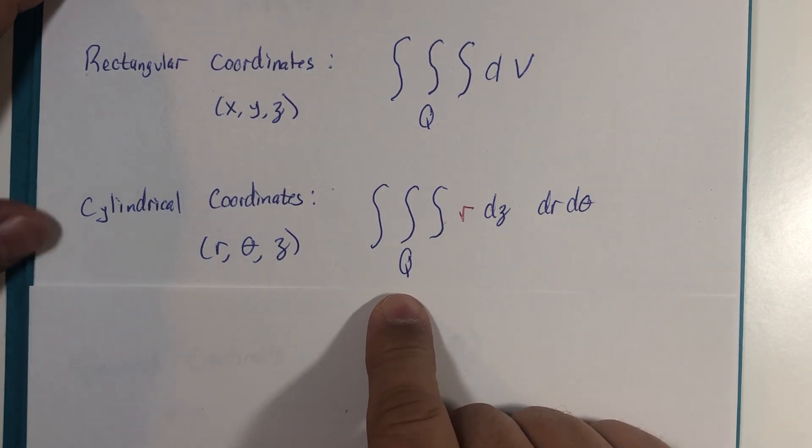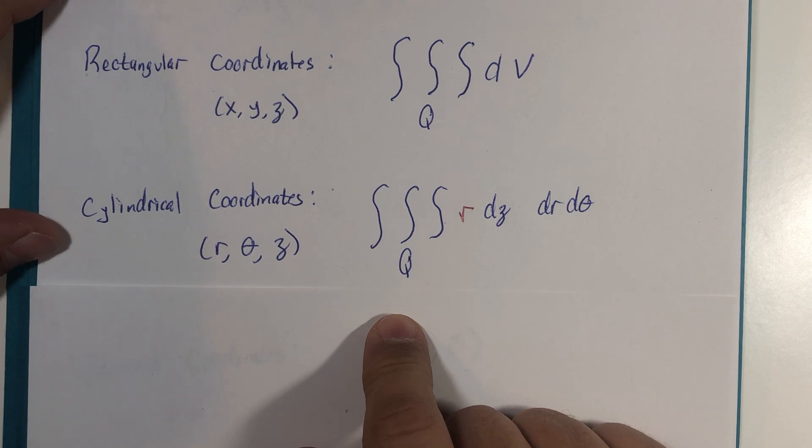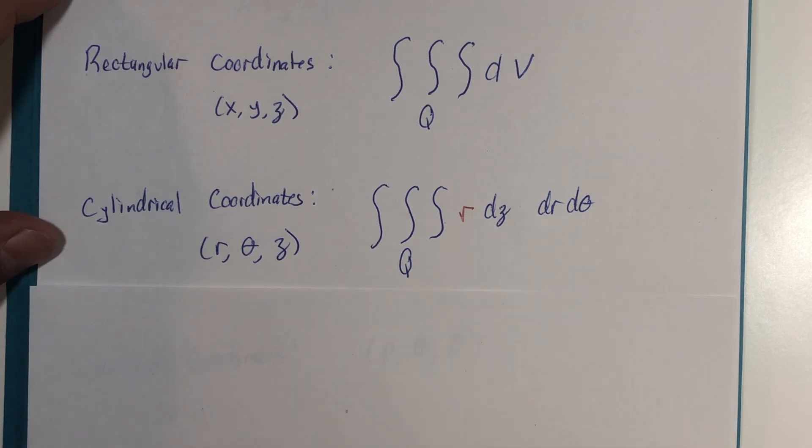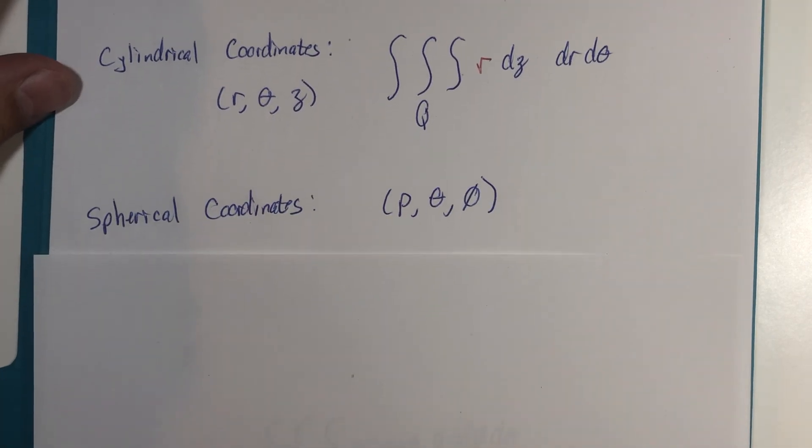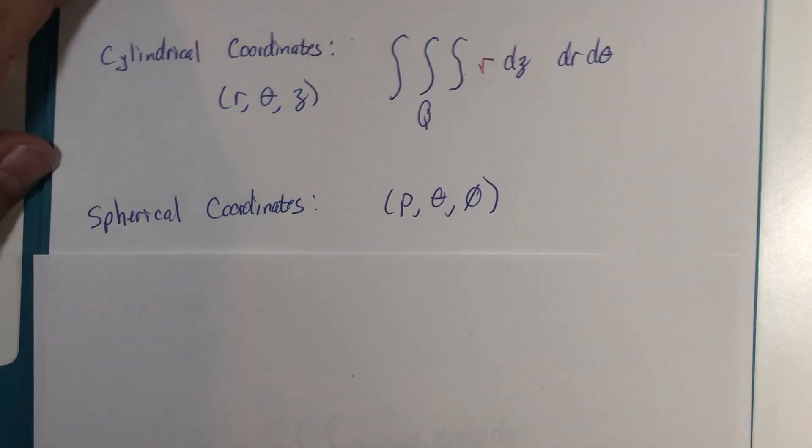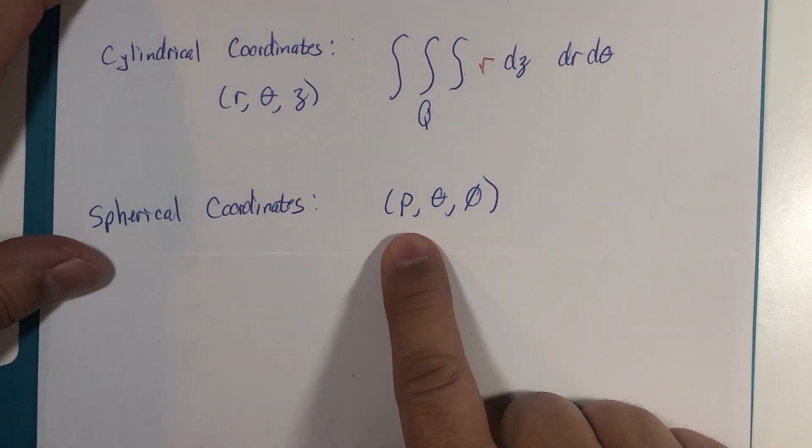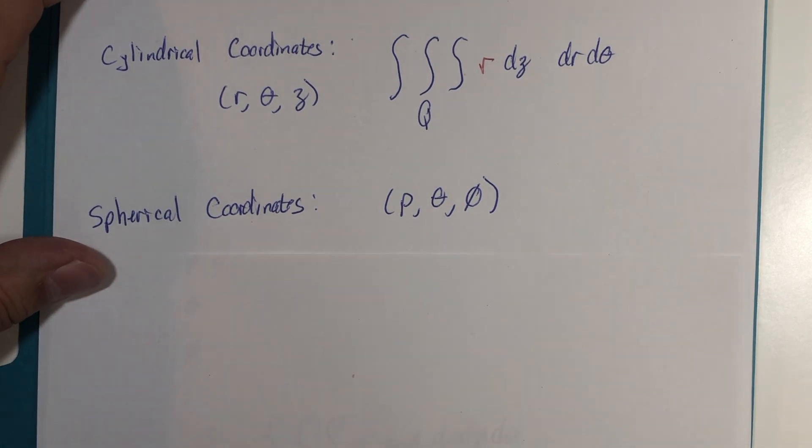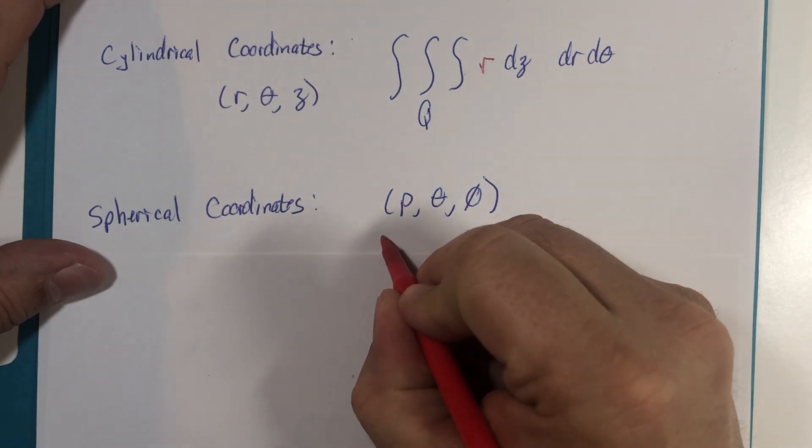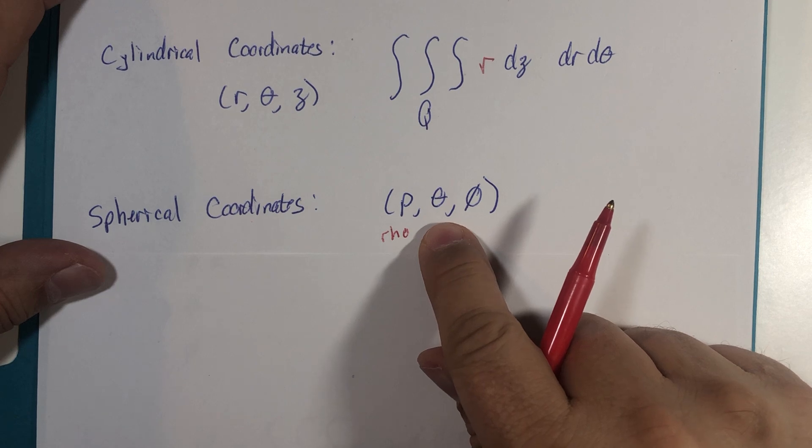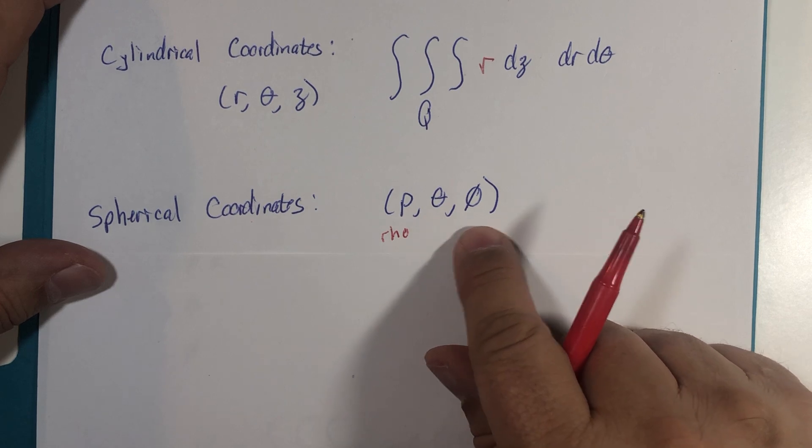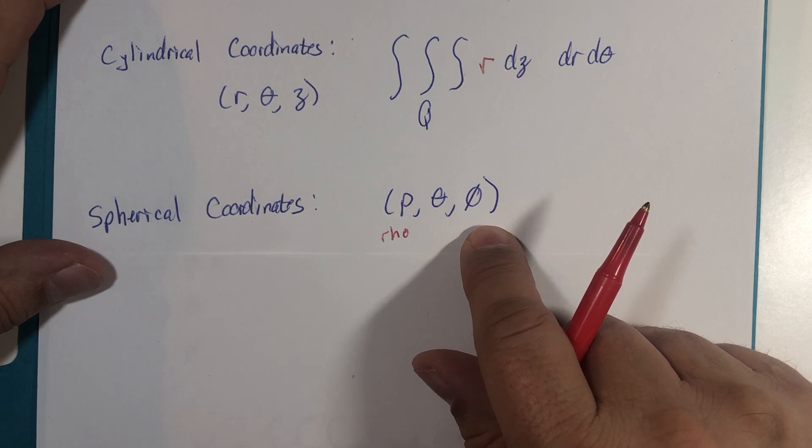There's one other coordinate system in three dimensions from earlier this semester that we haven't used yet, and those were spherical coordinates: rho (the Greek letter rho), theta (the angle in the xy plane), and you can either pronounce it phi or phi.